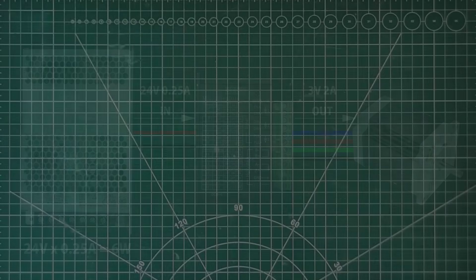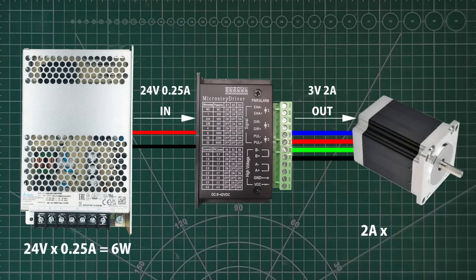So if we go back to our power calculation, we can see that 2 amps times 3 volts is equal to 6 watts, which is the same as the power consumption from the supply. This is how the driver can supply 2 amps to the motor, whilst only drawing a quarter of an amp from the supply.